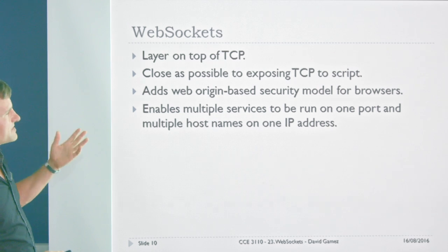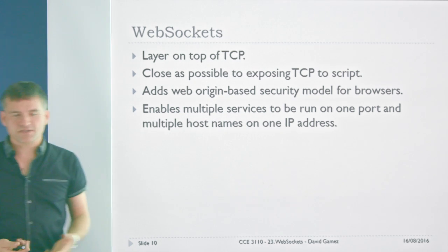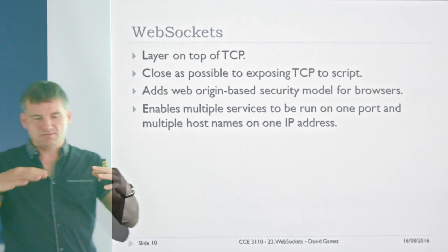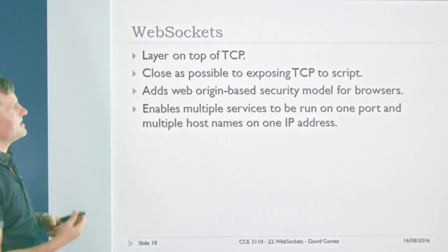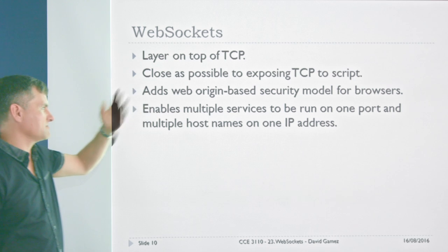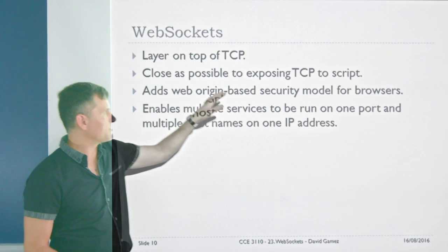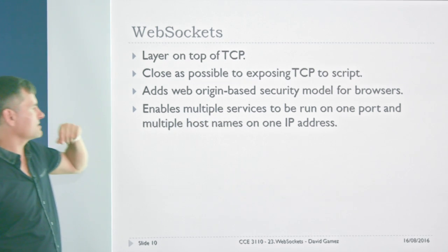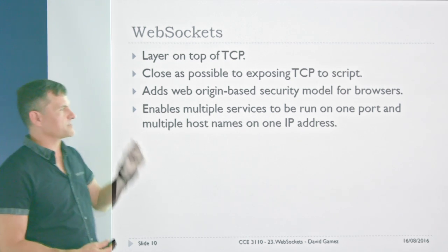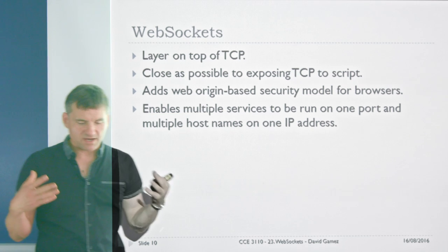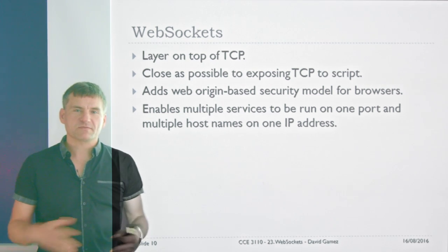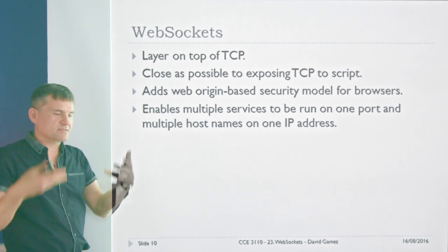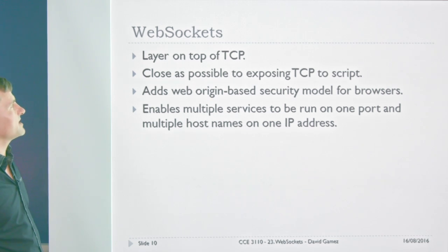Its advantage over raw sockets is that it runs over HTTP. It's very close to actual sockets — just a little layer on top of TCP that's as close as possible to exposing TCP to JavaScript. You can add the web origin-based security model for browsers if you want. You can run multiple services on one port and multiple host names on one IP address. It essentially allows socket connections running over HTTP, which doesn't create any problems with firewalls. It's great that you can sit this bi-directional communication on top of the HTTP protocol.